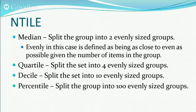And then there's percentile — you always hear this in school or when you have kids and go to the doctor when they're young. They always say your kid's in the whatever percentile for weight and height. It's basically similar to decile, but it's splitting the entire group into 100 sized groups. So if there's 100 people in the room and you are in the 97th percentile for height, that means there are three people taller than you and 96 people shorter than you.